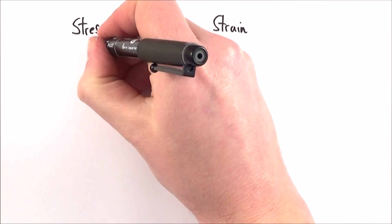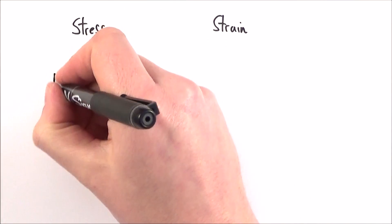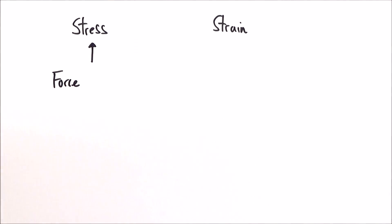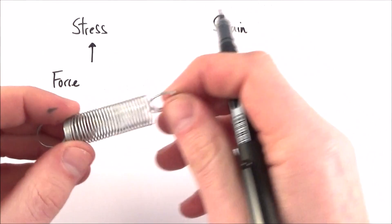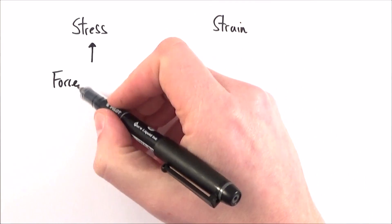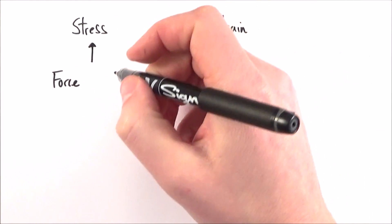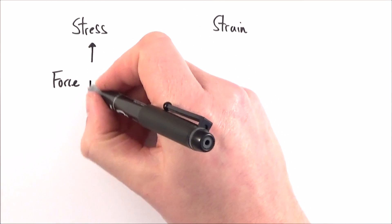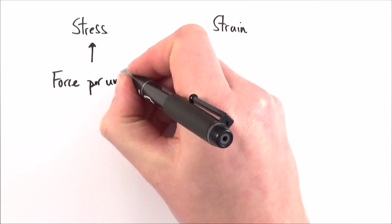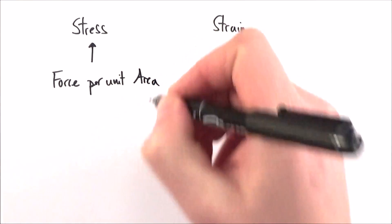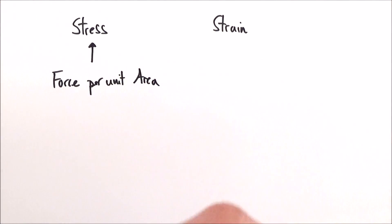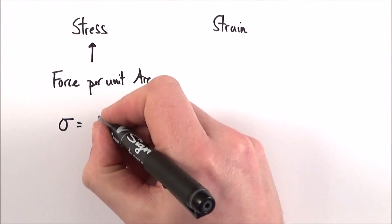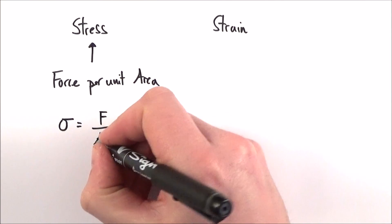So first of all, stress — what's that? Well, basically, if you apply a force to an object, then it will deform. We saw with springs how you apply a force and the whole thing will move. And basically, if you have a force that causes some kind of deformation, then we say there's a stress applied. We can talk about the force per unit area. The symbol for stress is a bit of a weird one — it's sigma. So stress is equal to the force per unit area.